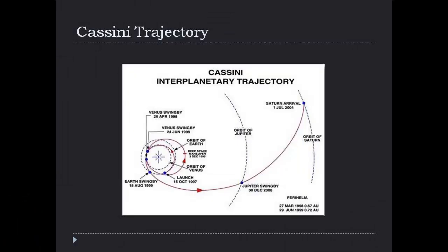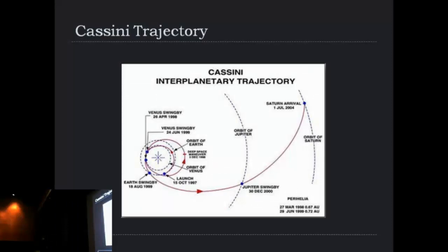If you want to go to Saturn, here's how you do it. You start on October 15, 1997, launching your spacecraft from Earth. For some reason, the best way to go to Saturn is to go to Venus first — you swing by Venus a couple of times, then come back past Earth two years after launch, in August 1999. That sends you in the right direction; you go by Jupiter about a year later, and then four years after that you end up at Saturn. That is the trajectory for Cassini, arriving in 2004, still working, arrived on time.